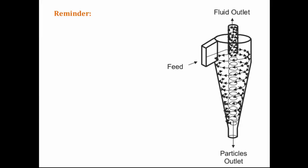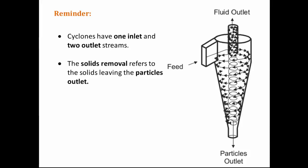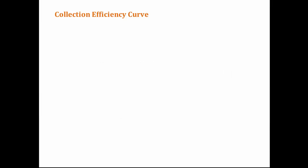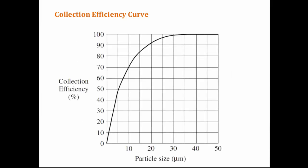To do a balance on a cyclone, we need to remember that cyclones have one inlet and two outlet streams. In the question, the solids removal is referring to the solids leaving the particles outlet that is labelled on the diagram. The outlet concentration is the concentration of solids in the fluid outlet. This is the collection efficiency curve given by the question. The collection efficiency is the percentage by mass of solids that would be collected.